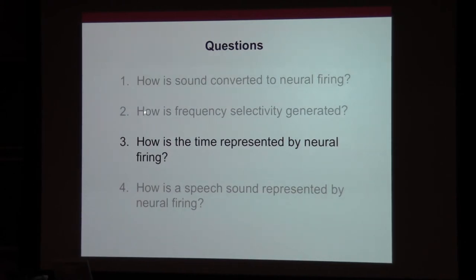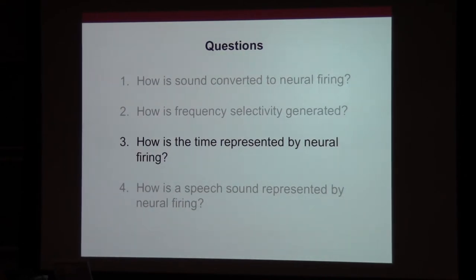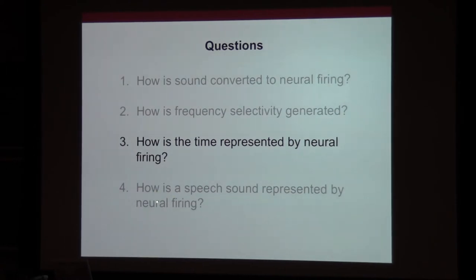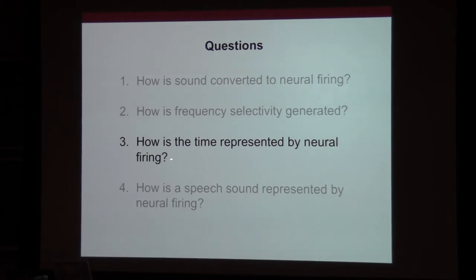These are the questions I raised in my last lecture about the auditory system. We discussed how sound is converted to neural firing through the vibration of a hair cell — very important. Second, how is frequency selectivity generated? We talked about mechanical vibration along the basilar membrane being frequency selective, not the hair cell. Third, we're going to talk about how time is represented by neural firing. In the interest of time, I'm going to skip the speech processing section, since you're doing a speech analysis lab right now.